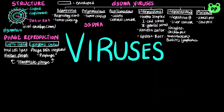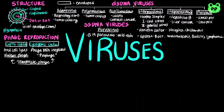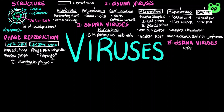The second class of viruses contain single-stranded DNA, including parvoviruses such as B19 parvovirus, which causes mild rash. The third class of viruses contain double-stranded RNA, including rheoviruses such as rotavirus, which causes diarrhea, as well as Colorado tick fever viruses.